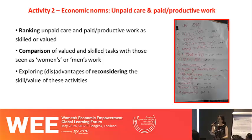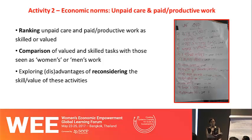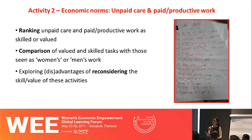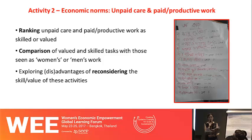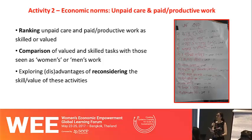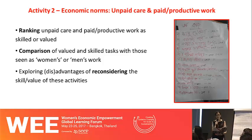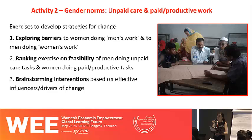The second activity looked at unpaid care and productive work. First, we looked at economic norms about how people perceived unpaid care and paid and productive work — whether they were skilled or valued. Participants were asked to rank unpaid care and paid and productive work according to skill and value, then there was a comparison of tasks seen as most or least skilled or valued with those tasks normally done by women or men. We then explored the advantages and disadvantages of reconsidering the skill or value of those activities, introducing the concept of shifting social norms.